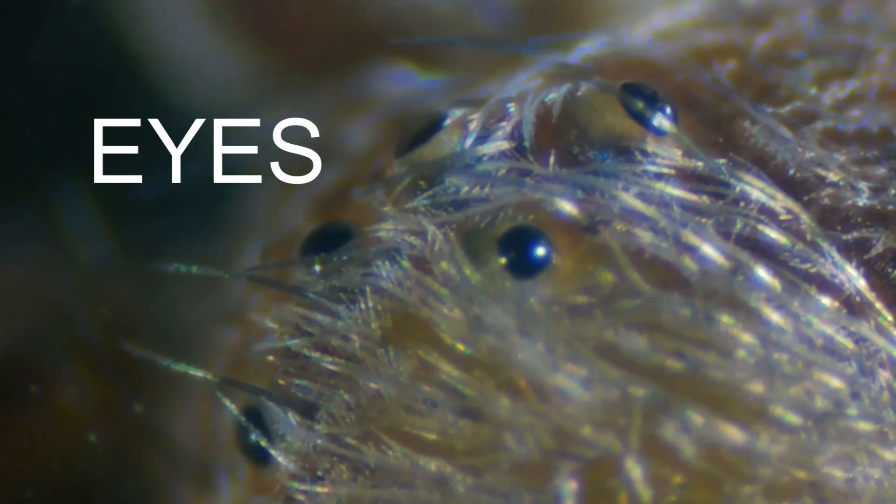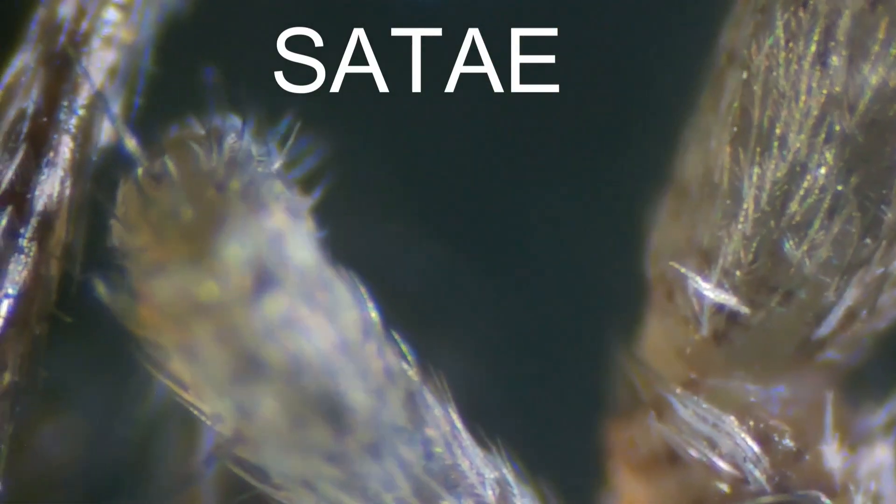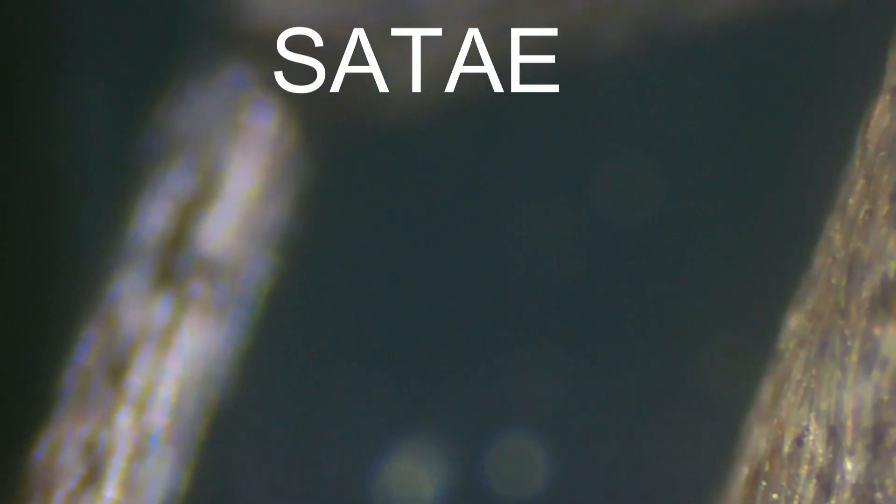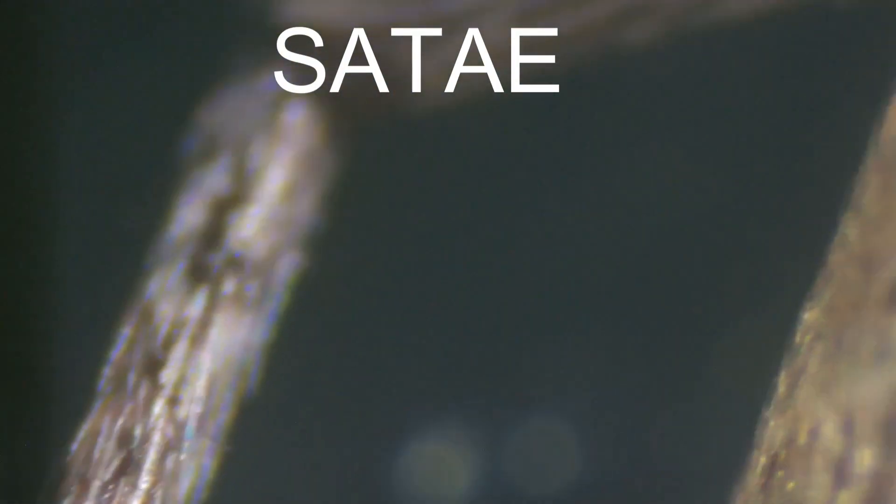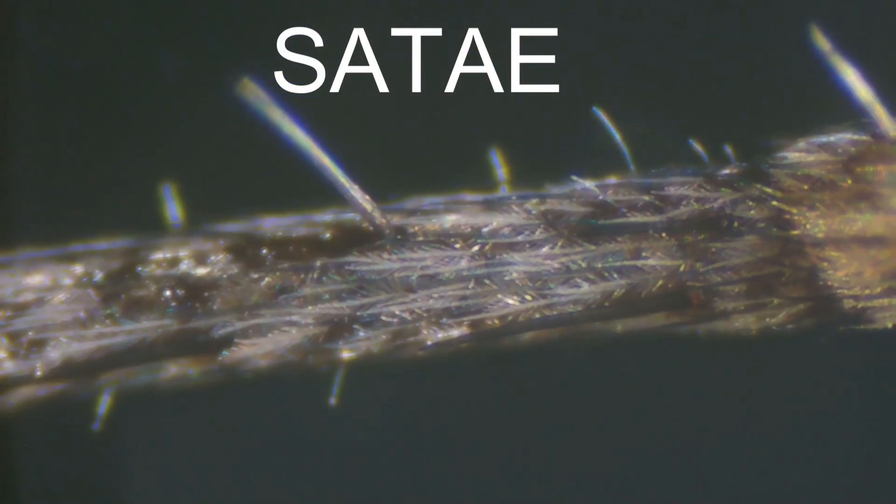It's a superpower that allows the spider to detect the approach of even the smallest insects. But look even closer, and you'll notice tiny claws at the tips of these legs. Perfect for gripping its silken web, walking upside down, and manipulating its prey.